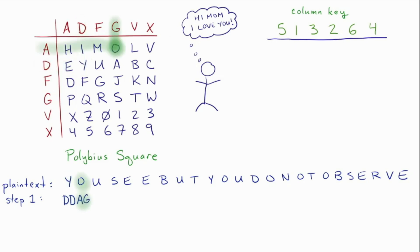Here O is AG. So notice I'm taking row column as the ordering of my coordinates. And then I continue the process. So U, for example, would be DF, and S here will be GG, and so on all the way through.